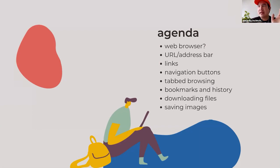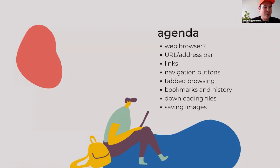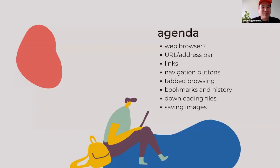All browsers allow you access to the internet — it's like different car manufacturers. If you like Toyotas, there's Toyotas. If you like Hondas, there's Hondas. If you like Fords, there's Fords. These are all vehicles that allow you to get to the internet — just different flavors for different preferences.